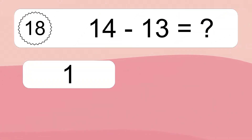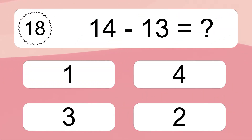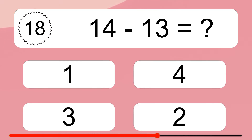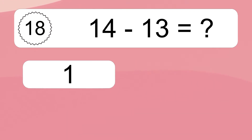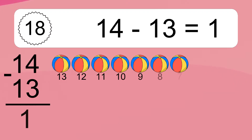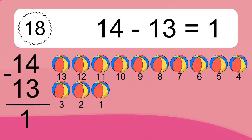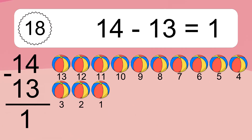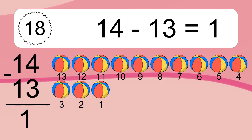14 minus 13 equals what? 14 minus 13 equals 1. Let's count it! 13, 12, 11, 10, 9, 8, 7, 6, 5, 4, 3, 2, 1.